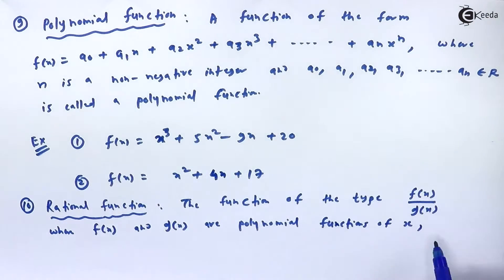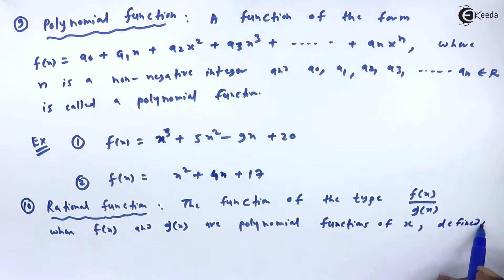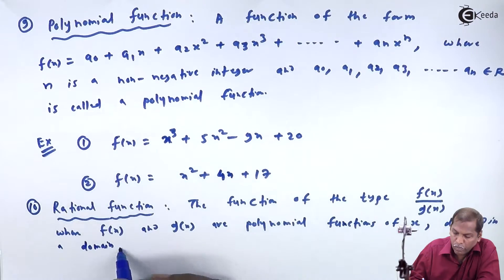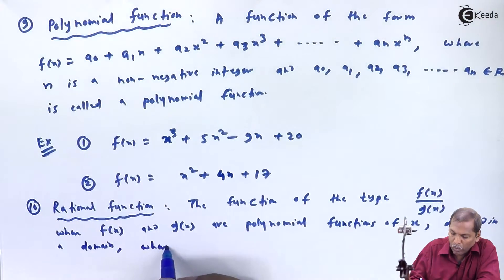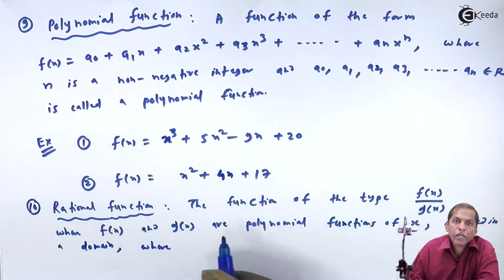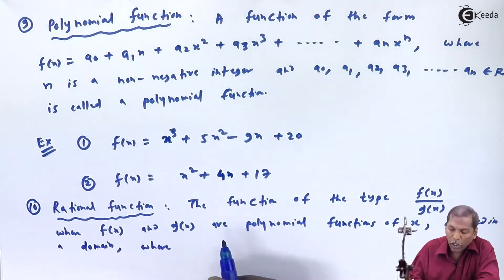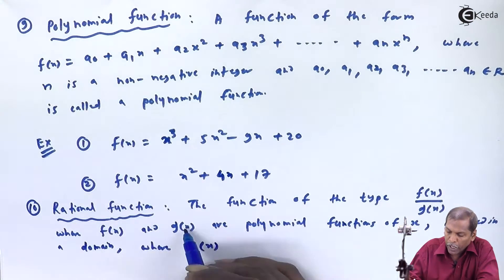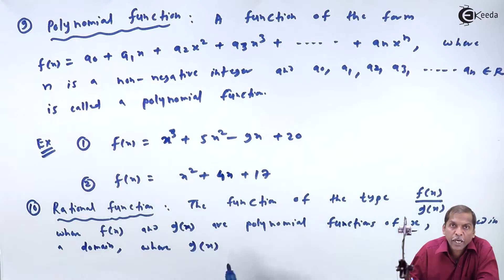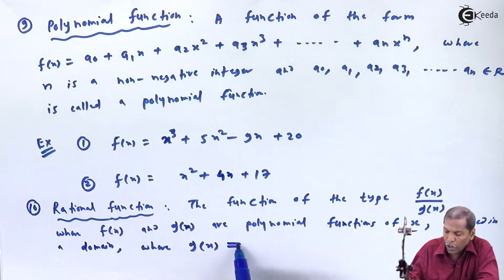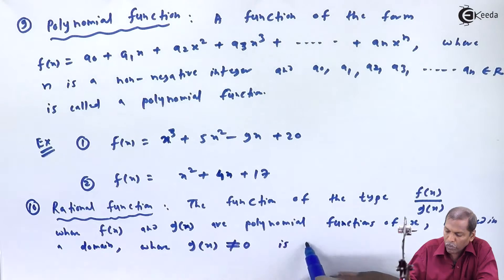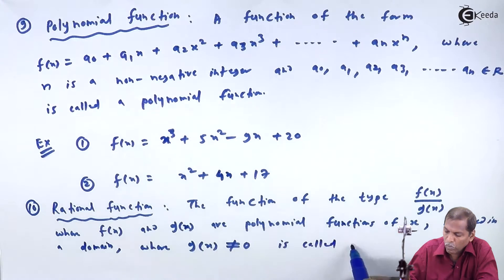defined in a domain where condition on denominator: that denominator is not equal to 0. That is, in present case denominator is g(x). So g(x) not equal to 0 is called a rational function.